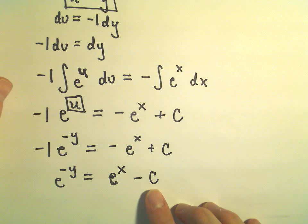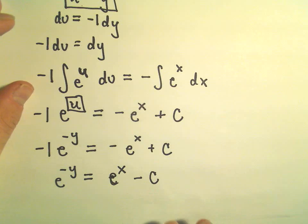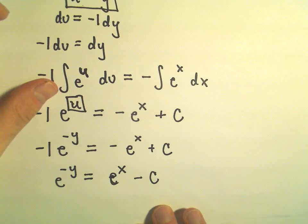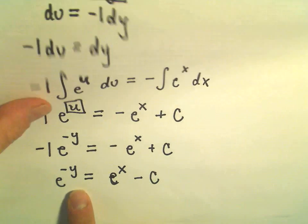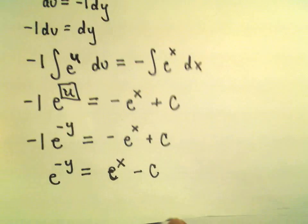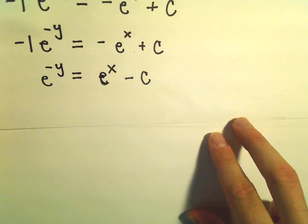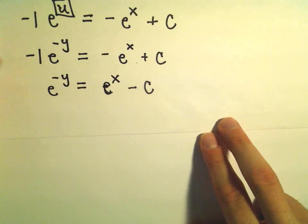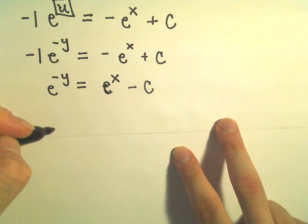This constant is really kind of an arbitrary constant anyway, so the sign on it, in a sense, is irrelevant. But one other thing too on these. If we can solve for the dependent variable, which in this case is going to be y, we typically do that.